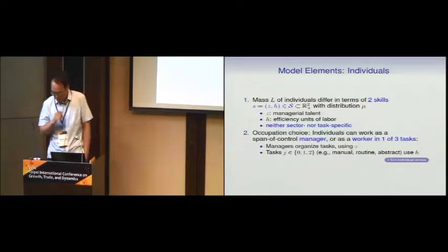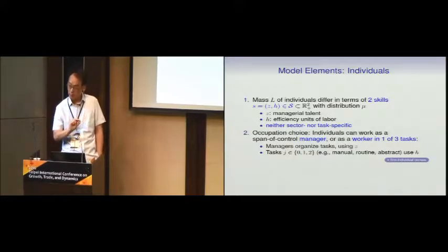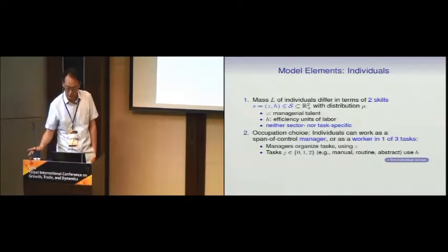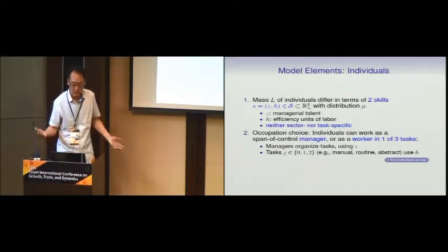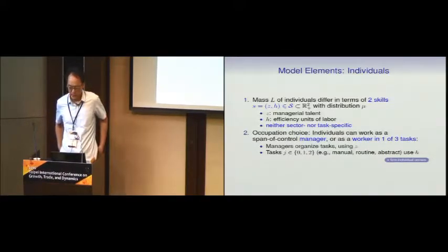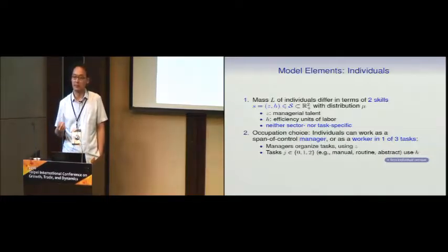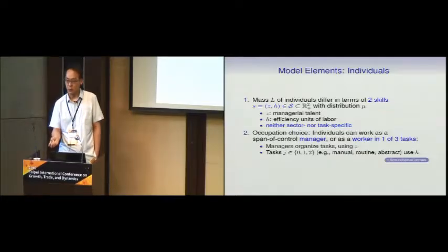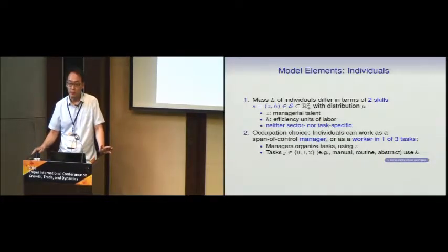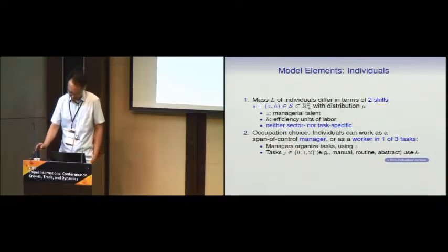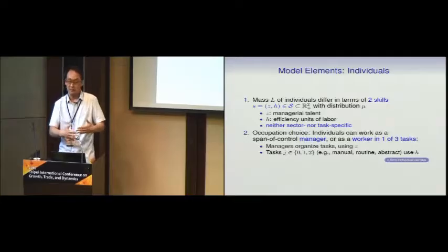Let me start with the model. For the theoretical discussion, I'll talk about four occupations only: one manager occupation and three worker occupations. In the calibration and structural estimation part, we'll have one manager occupation and ten worker occupations. The model easily extends to more occupations and sectors. We're going to add another fact called vertical polarization — what happens to managers relative to workers — and look at what's happening.